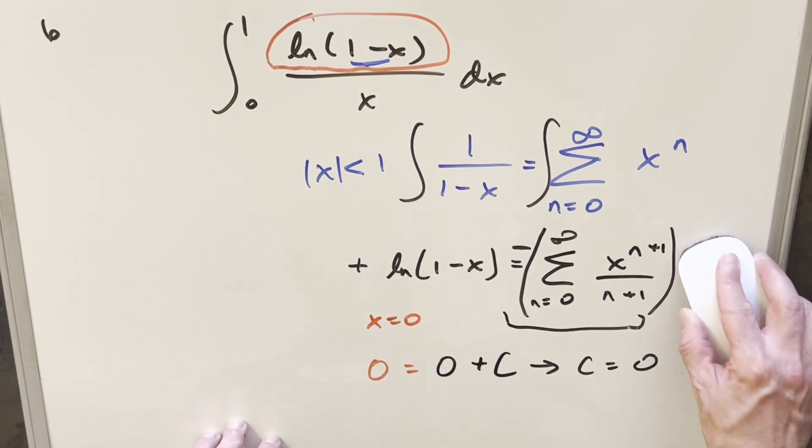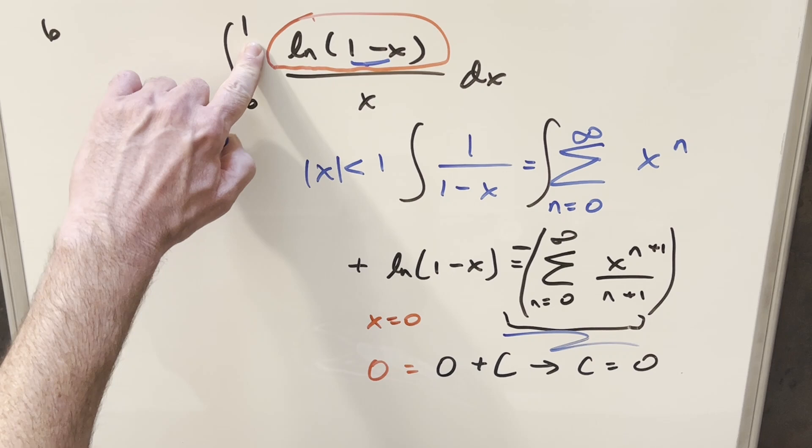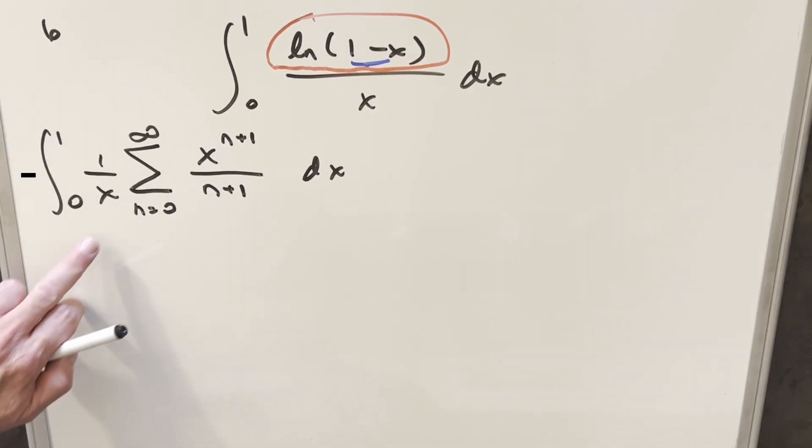So what we can do is just remove our plus c, take this value right here, plug it in for our natural log one minus x, and see what we can do to integrate this thing. But now from here, I still have this one over x in front to worry about.